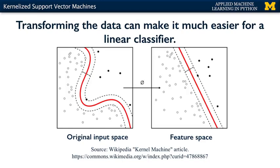This idea of transforming the input data points to a new feature space where a linear classifier can be easily applied is a very general and powerful one. There are lots of different possible transformations we could apply to data, and the different kernels available for the kernelized SVM correspond to different transformations. Here we're going to focus mainly on what's called the radial basis function kernel, which we'll abbreviate as RBF, and also look briefly at something called a polynomial kernel that's also included with scikit-learn's SVM module.